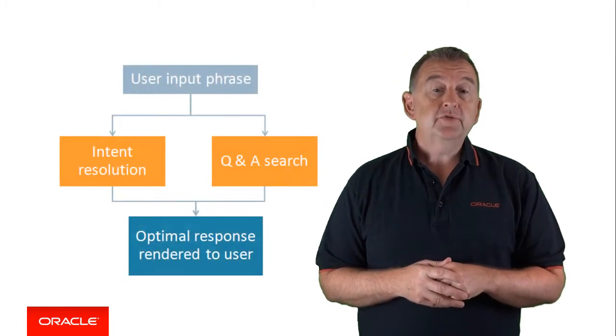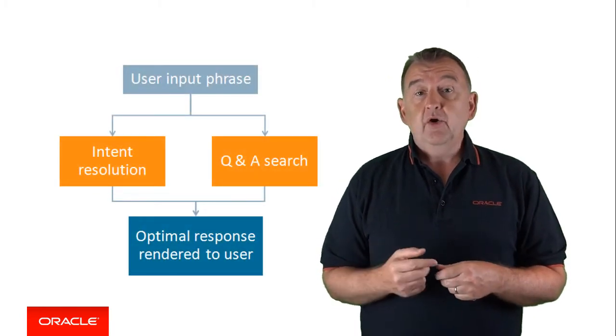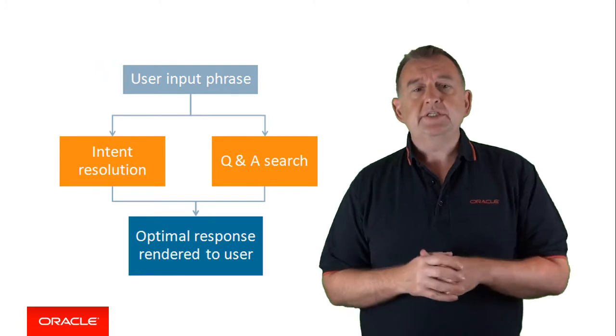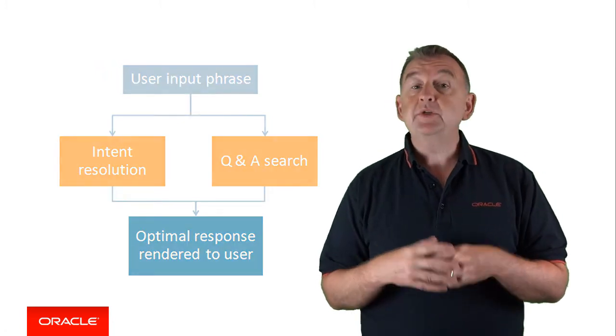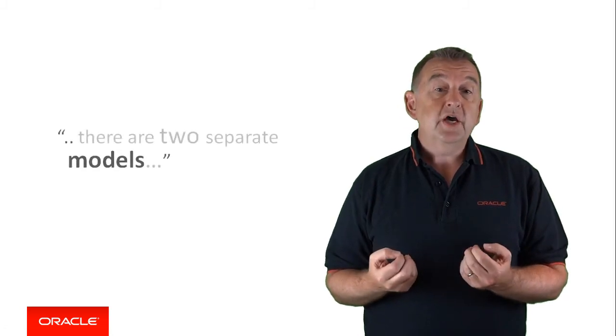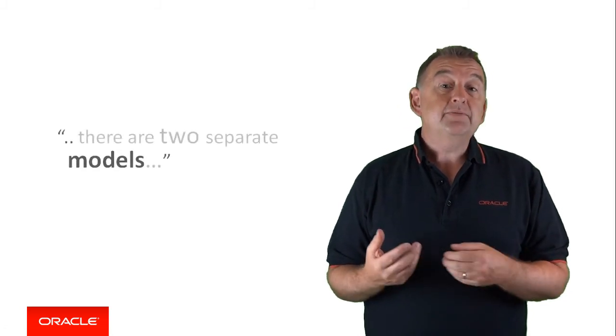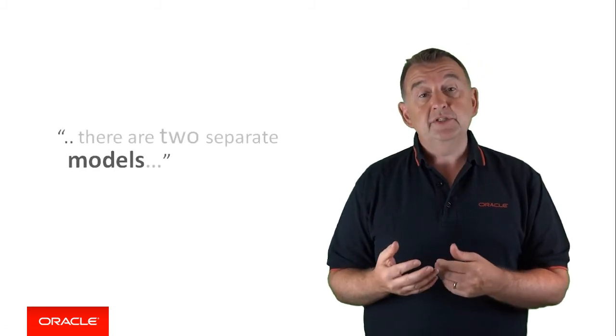I've talked about how a user phrase could be resolved to an intent or a Q&A, or in fact both, but how does this process actually work? Intent resolution is based on understanding the meaning of whole sentences, where Q&A is more about matching words as tokens. Since there are two ways of resolving user input, there are two separate models, and each model has a different way of establishing the success of a match. So let's take a look at this in a little more detail.